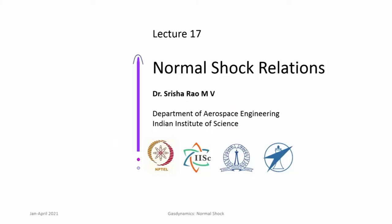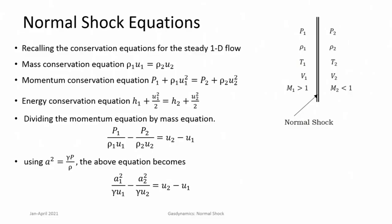We are discussing the analysis of normal shocks and going through the details of how to gather all information about flow variables downstream of the normal shock. In the last class we discussed getting to Prandtl's relation for normal shocks using the conservation equations. The conservation equations of mass, momentum, and energy for one dimension are used to analyze the normal shock.